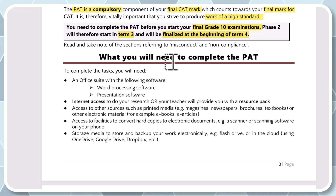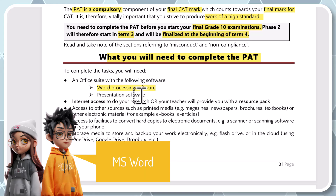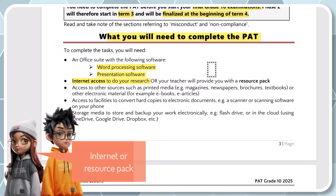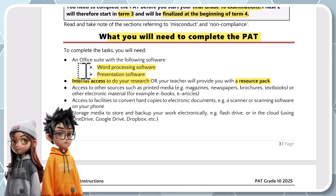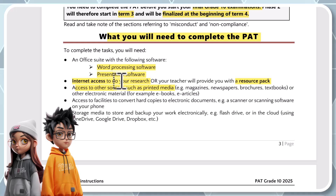So what will you need to complete the PAT? To complete the task you will need an office suite — Microsoft Word, which is word processing software — and presentation software like PowerPoint. Your CAT labs should have all that software available. You'll also need access to the internet to do your research, or your teacher will provide you with a resource pack which is also in that folder, containing links to help with your research.